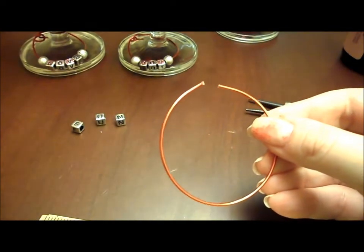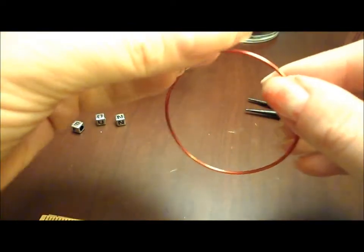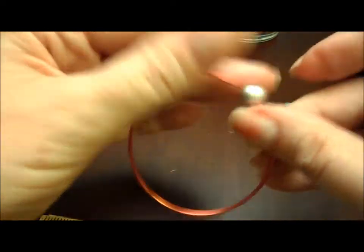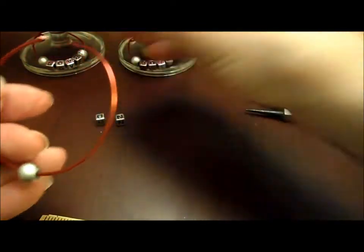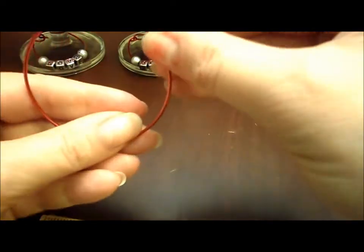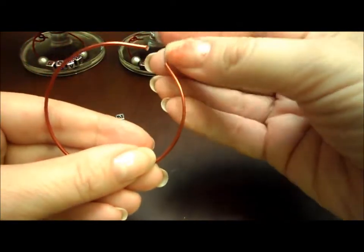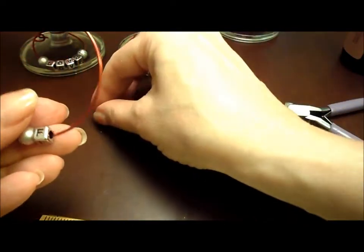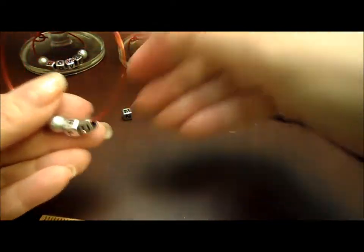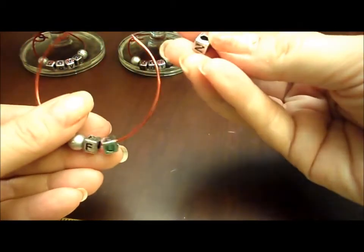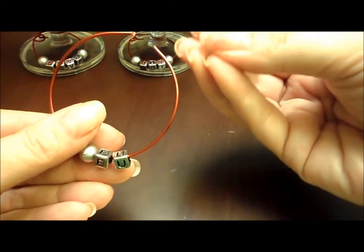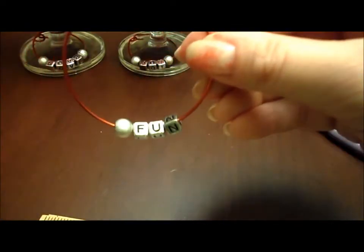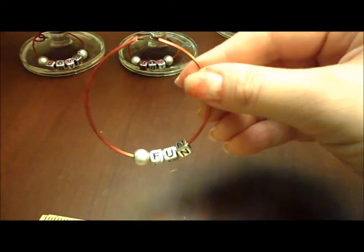Now we want to put our beads on. So I'm going to take one bead. And I've already picked out my beads here. You want to make sure they're going up in the right direction. You could use this to spell out people's names. And we're going to finish off with a bead.